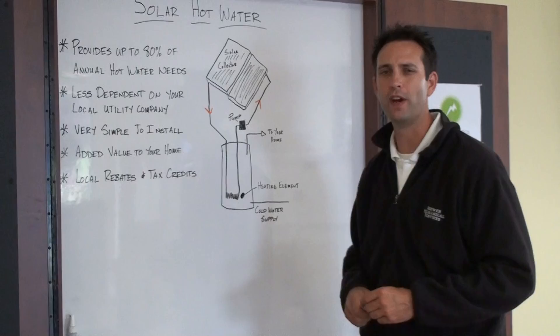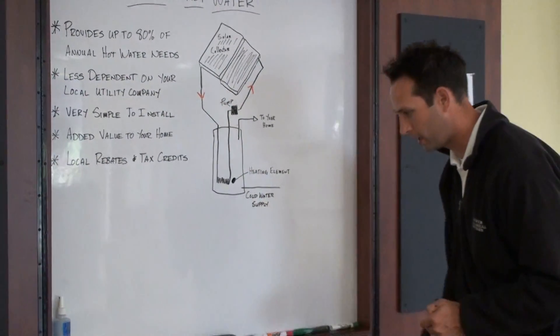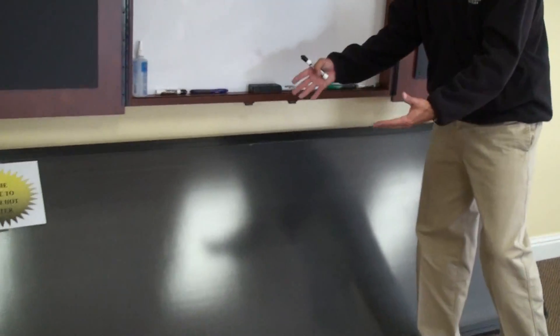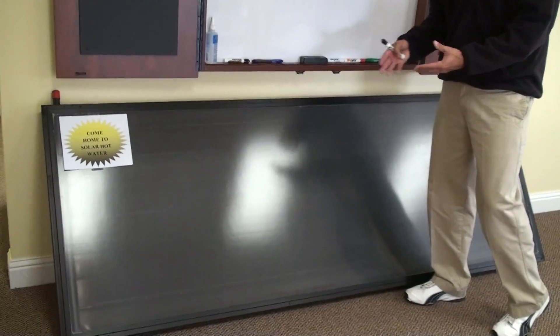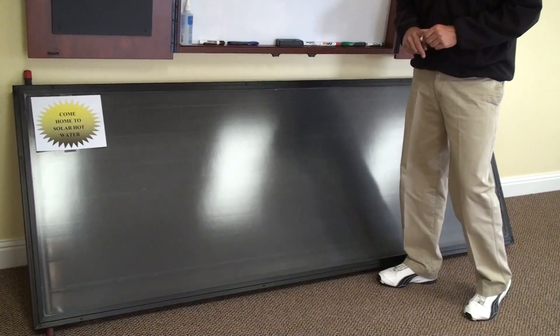One of the benefits too is it's very extremely simple to install. In fact, I have a panel right here that you can see. This is actually what goes up on your roof. When you think about how many panels you need for solar hot water, you only need one to two of these panels. It only takes up about 40 to 50 square feet of your roof space.